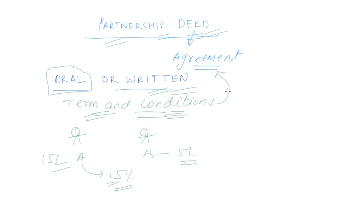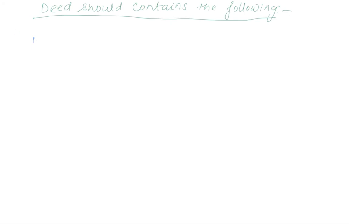So, let us see what exactly this deed should contain. What we need to understand this deed should contain the following. Number one, name and address of firm. Firm means partnership firm in which two or more partners are working. So, this firm's name and address should be in partnership deed. Very basic thing.